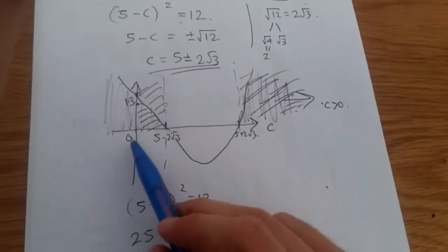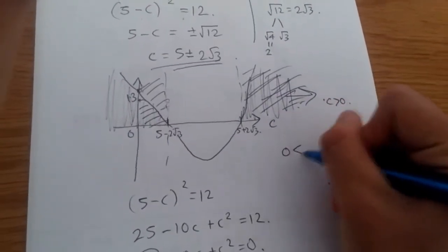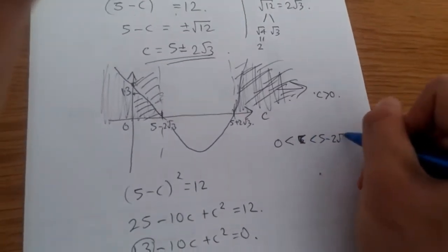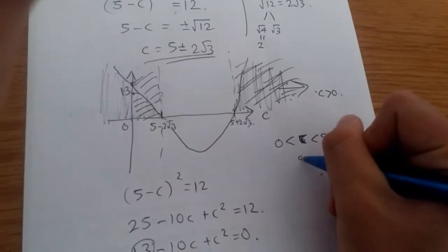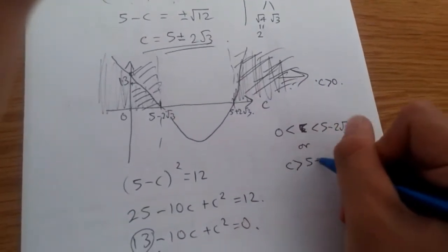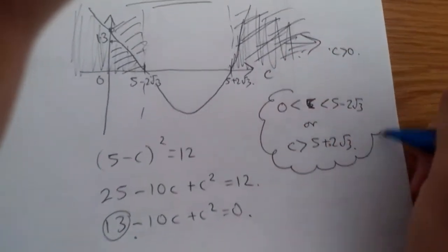So, our range of c values will be between 0 and 5 minus 2 root 3. So, we say our intervals are c less than 5 minus 2 root 3 or c is greater than 5 plus 2 root 3. And that's it, guys. This is pretty much our inequalities.